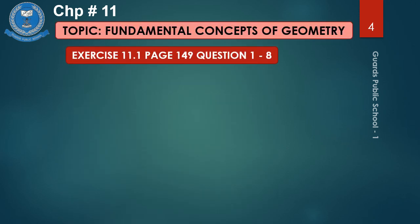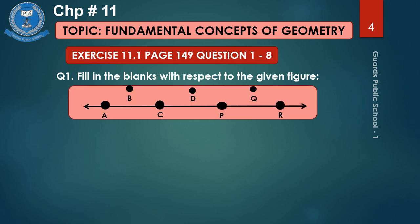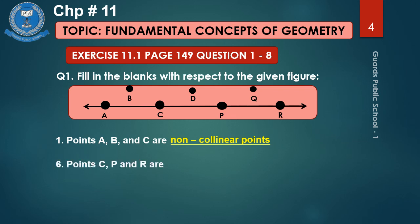It is time for Exercise 11.1, page number 149, question number 1 till 8. Fill in the blanks with respect to the given figure. You have to fill in the blanks with collinear points or non-collinear points. Number 1: Point A, B and C are non-collinear points. Why? Because B is not lying on a line. Number 6: Point C, P and R are collinear points. Why? Because these three points are lying on the same line.